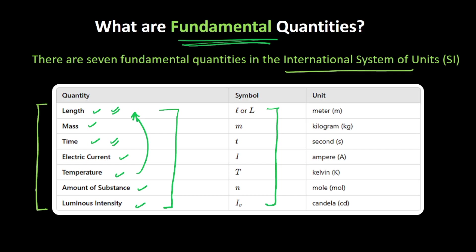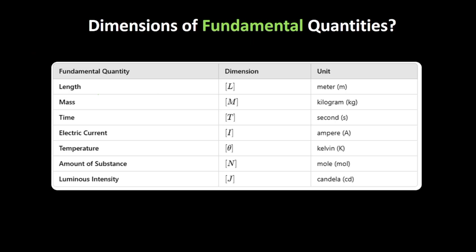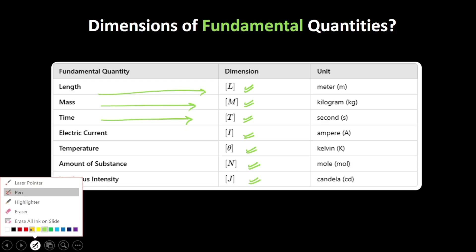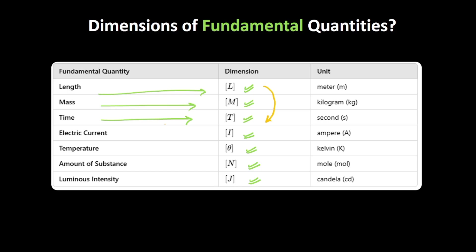These are the respective SI units of these fundamental quantities. We can also define dimensions for these physical quantities: length is represented as [L], mass as [M], time as [T], electric current as [I], temperature as [θ], amount of substance as [N], and luminous intensity as [J]. You can see that when writing the dimension of time we don't need length or mass, and the dimension of mass is not dependent on N, J, or L — so these are independent of each other.